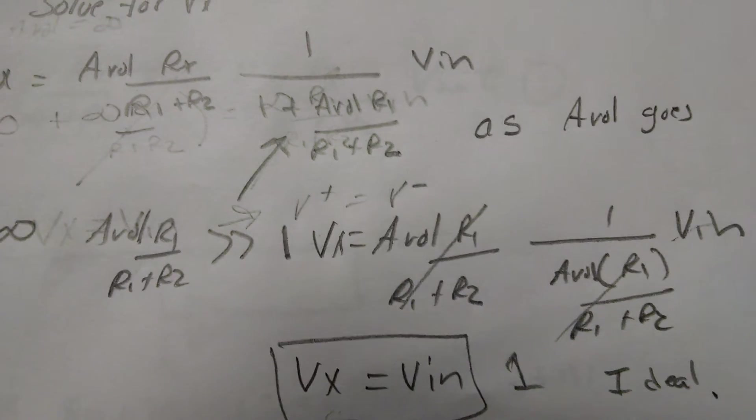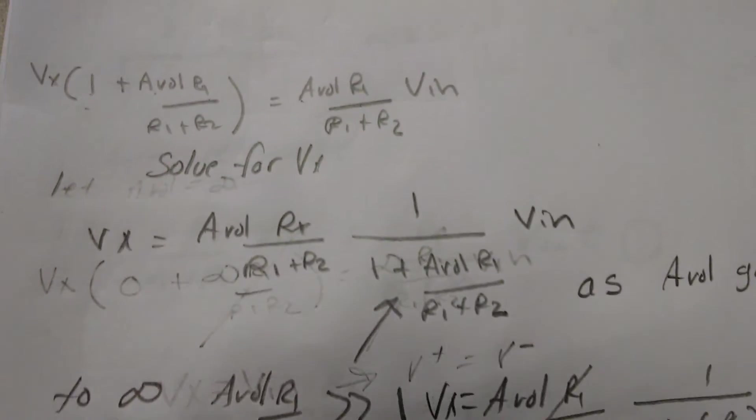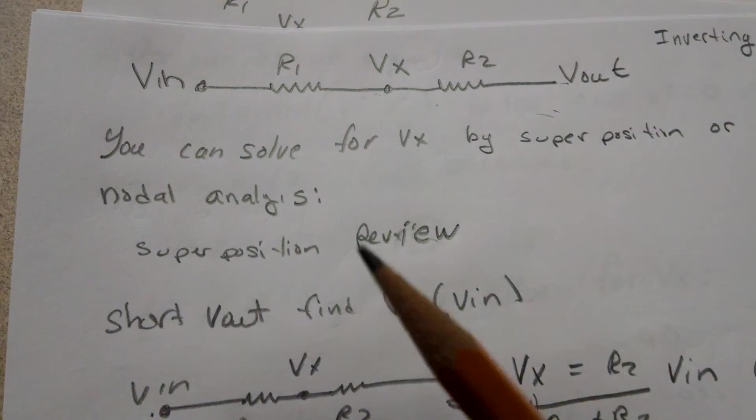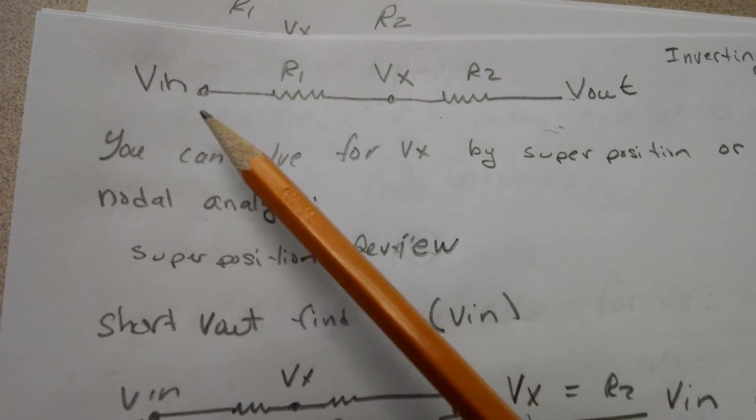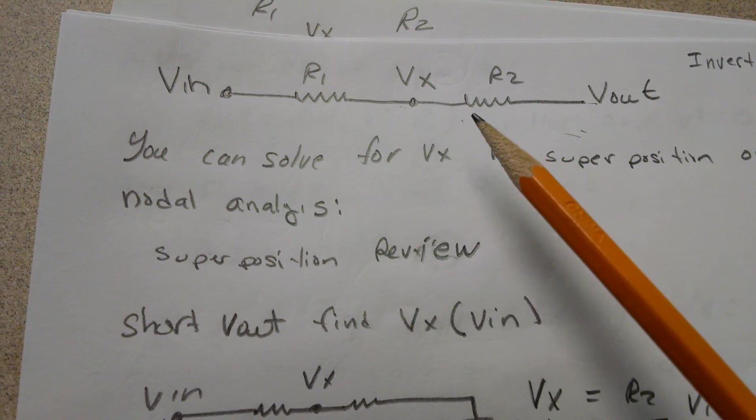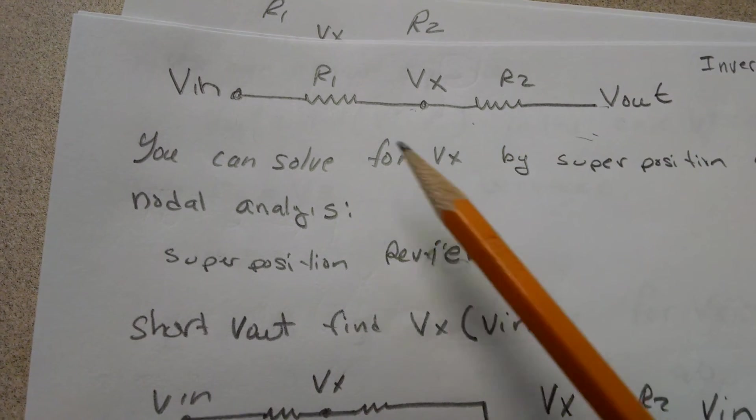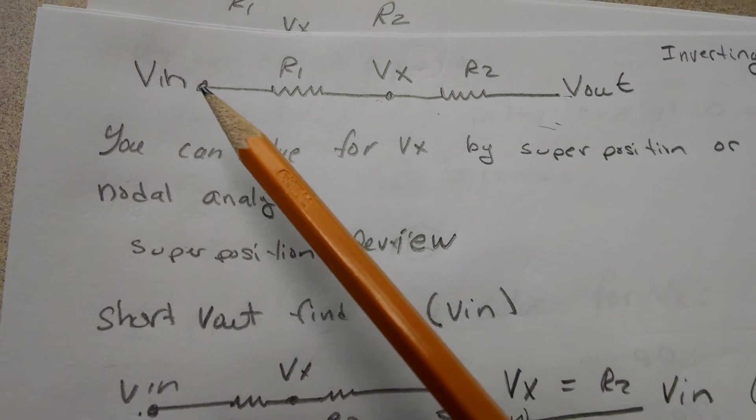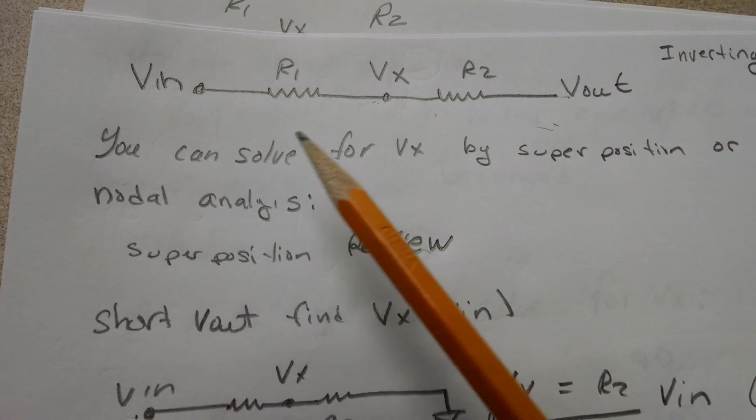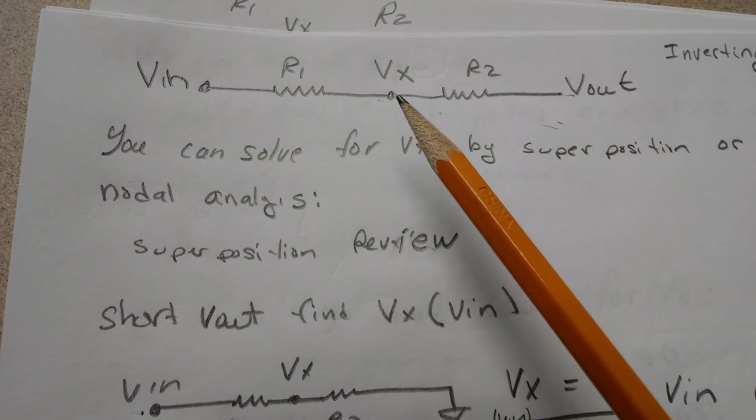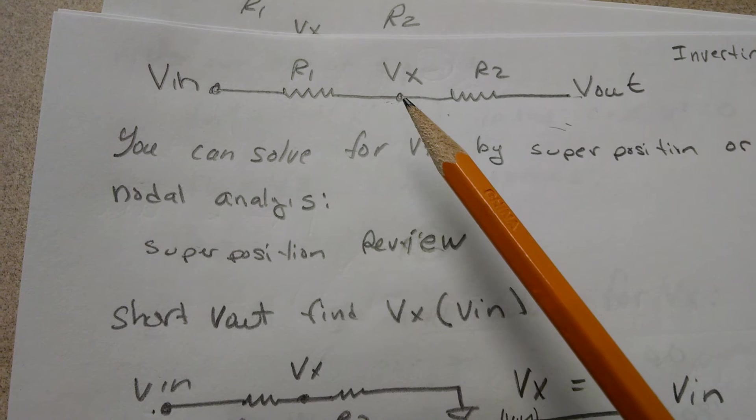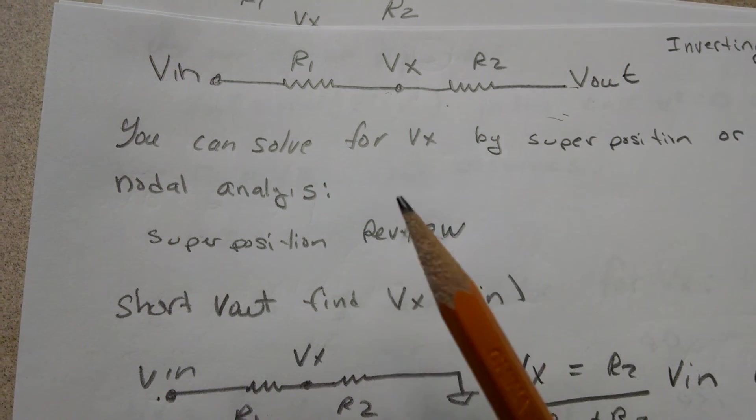In a real op-amp with a finite open-loop gain, there's a small voltage there. Now let's do this for the inverting. Again, I have Vin, R1, Vx, R2, and Vout. Before I had a ground here, now I've actually got another input.